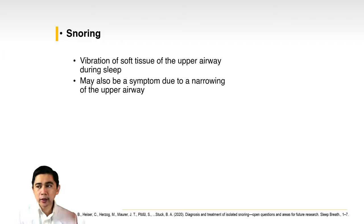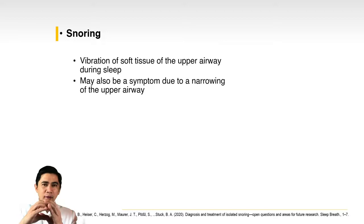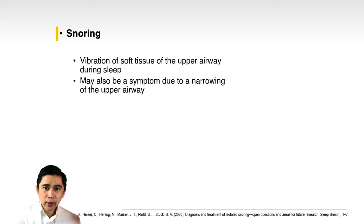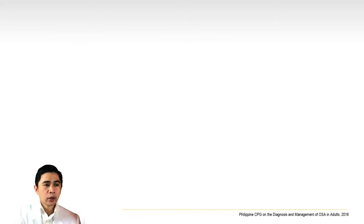Snoring can also be a symptom of a narrowing of the upper airway — like a whistle: when you blow air through a very small caliber, it produces a sound. In literature, around 26% of the population snores. Those most likely to have primary snoring are men, those with increased weight, those who smoke, and those who consume alcohol more than usual.